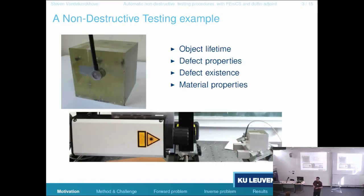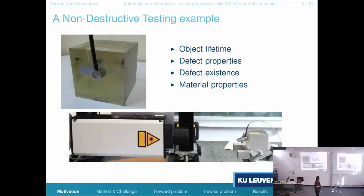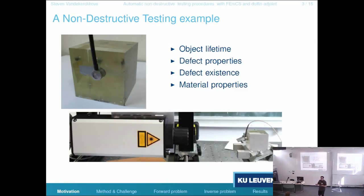There are four levels. The first level is: what are the material properties of the object in general? Then maybe you want to know whether or not there are defects inside your object. If there is a defect, you want to know the properties of the defect — shape, orientation, size, and so on. And once you know the properties of your defect, you want to know how long will my object last. There are several ways to do this. First thing that might pop in mind is doing MRIs — it's quite expensive and not that easy to do for solid objects. So I'm using ultrasound, basically — wave propagation problems to attack this problem.